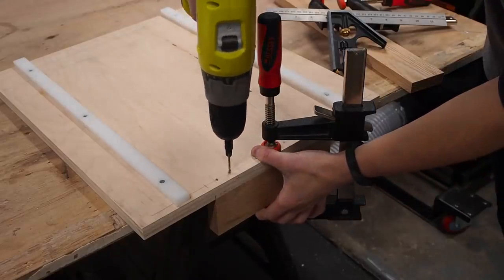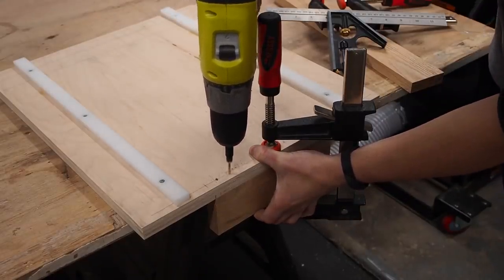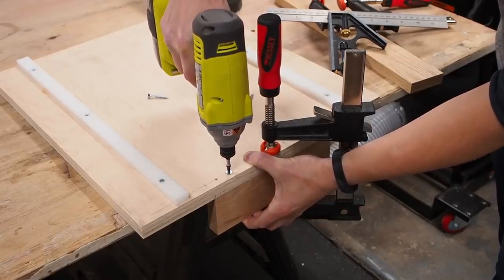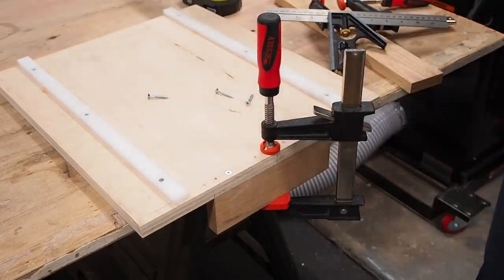At this point I'm only attaching the back bridge. The back bridge doesn't need to be square so I just clamped it and countersunk some screws making sure to avoid the center line where the blade will pass.